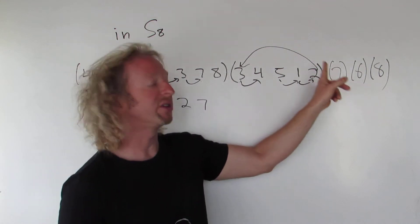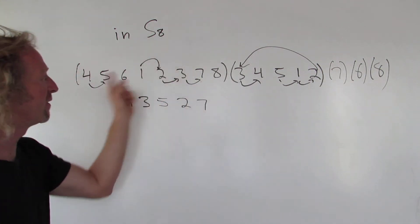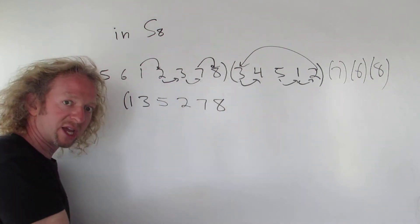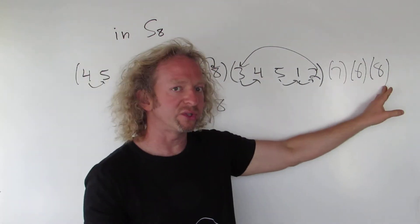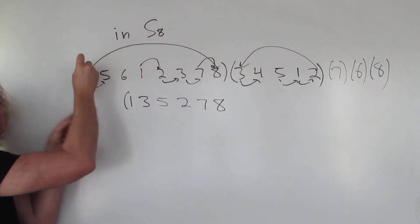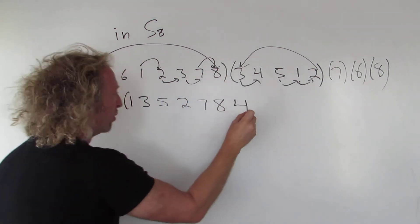7. Where does 7 go? 7 goes to 7. So you look over here for the 7. 7 goes to 8. So 7 goes to 8. Where does 8 go? 8 is fixed. 8 goes to 8. So you look over here. 8 goes all the way back to 4. So 8 goes to 4.